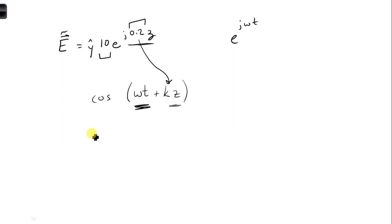So if we know that k equals 0.2, we also know that k equals 2 pi over lambda. That's exactly what we want to solve for.